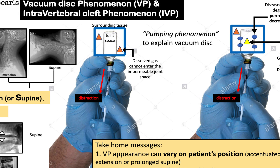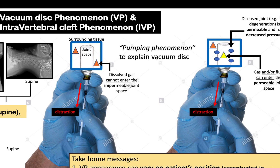A pumping phenomenon can explain the formation of vacuum discs. In a normal joint space, you have an impermeable joint. When you provide stresses on this joint, such as a distraction force demonstrated here by pulling of the plunger from a medicine vial, dissolved gas within the surrounding tissue will not be able to enter this joint space.